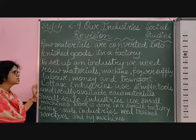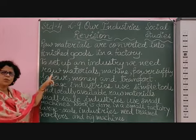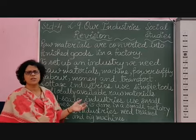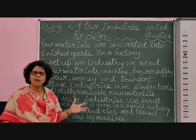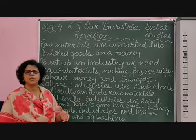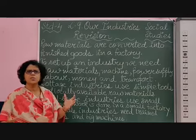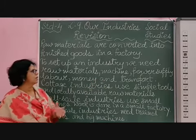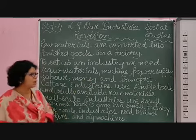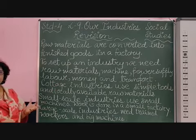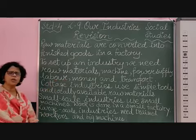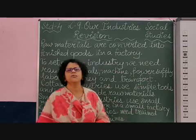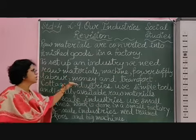To set up an industry we need certain things. First of all, raw materials — whatever product you are producing, whether electricity, plastic goods, electrical items, or grinding flour. You also need machines; without machines we cannot do the work. We need power supply; without electricity the machines cannot run. You need labor — people working to produce these goods. You need money and finance. And you need transport — transportation is needed for bringing the raw materials and sending the finished product to the market. So all these things are very important to set up an industry.